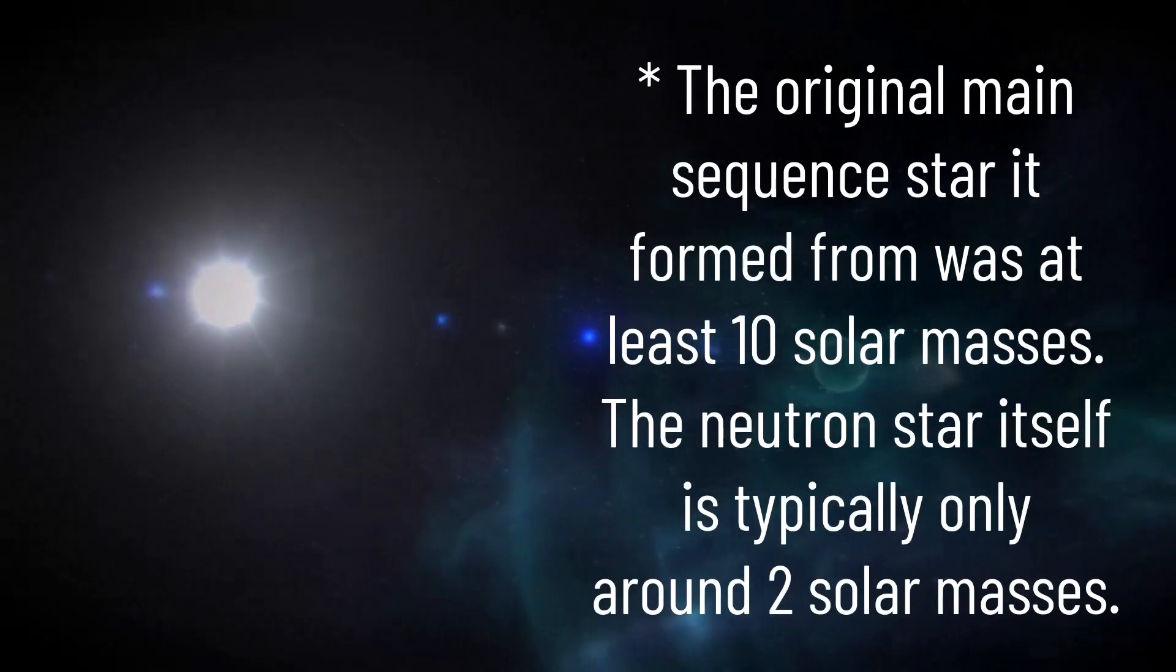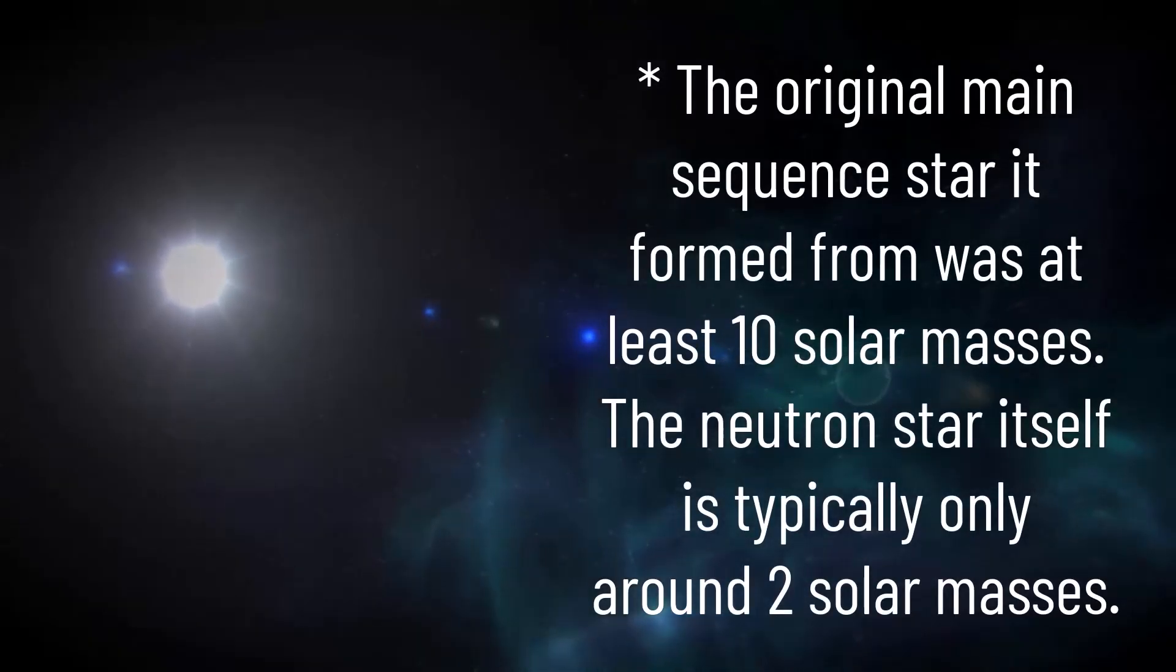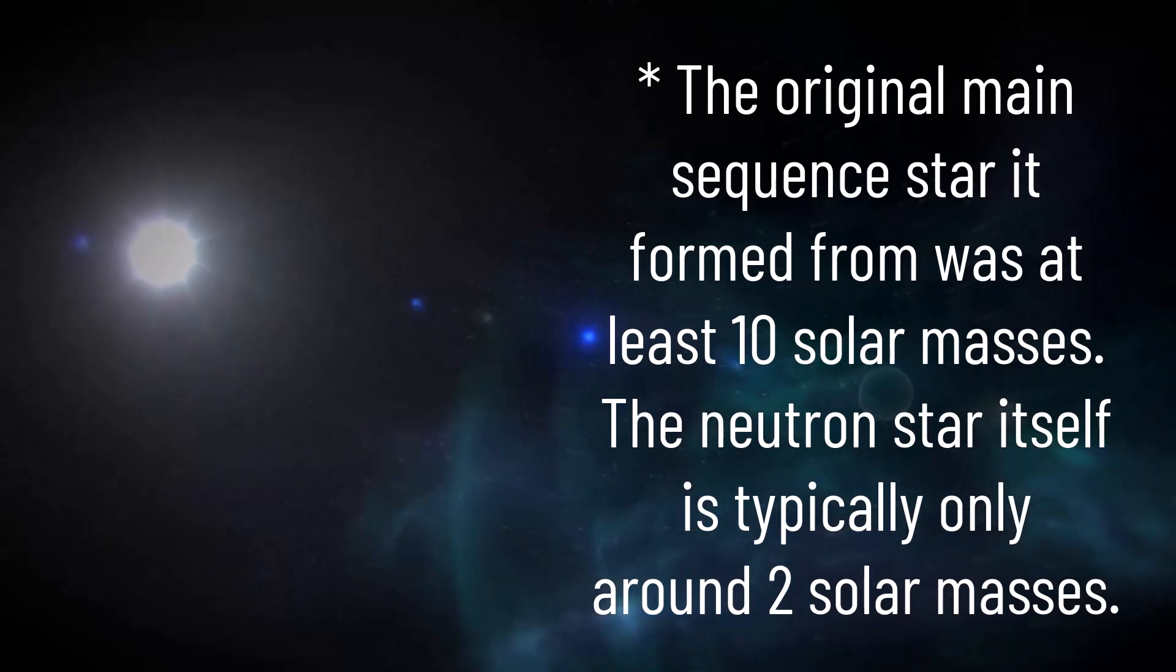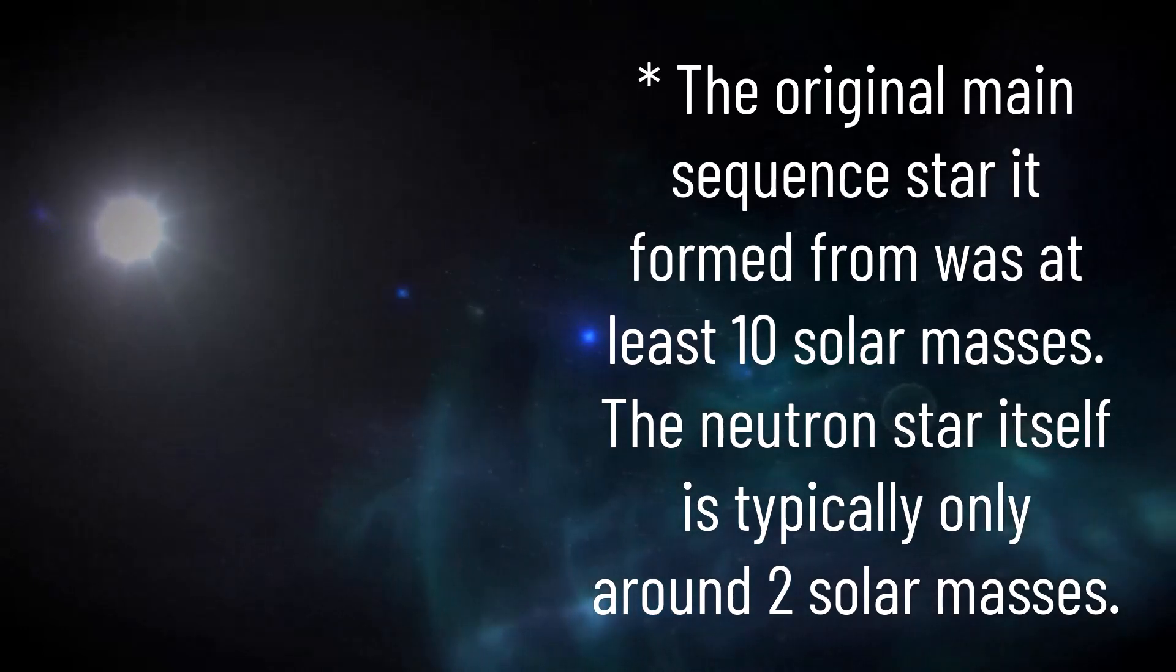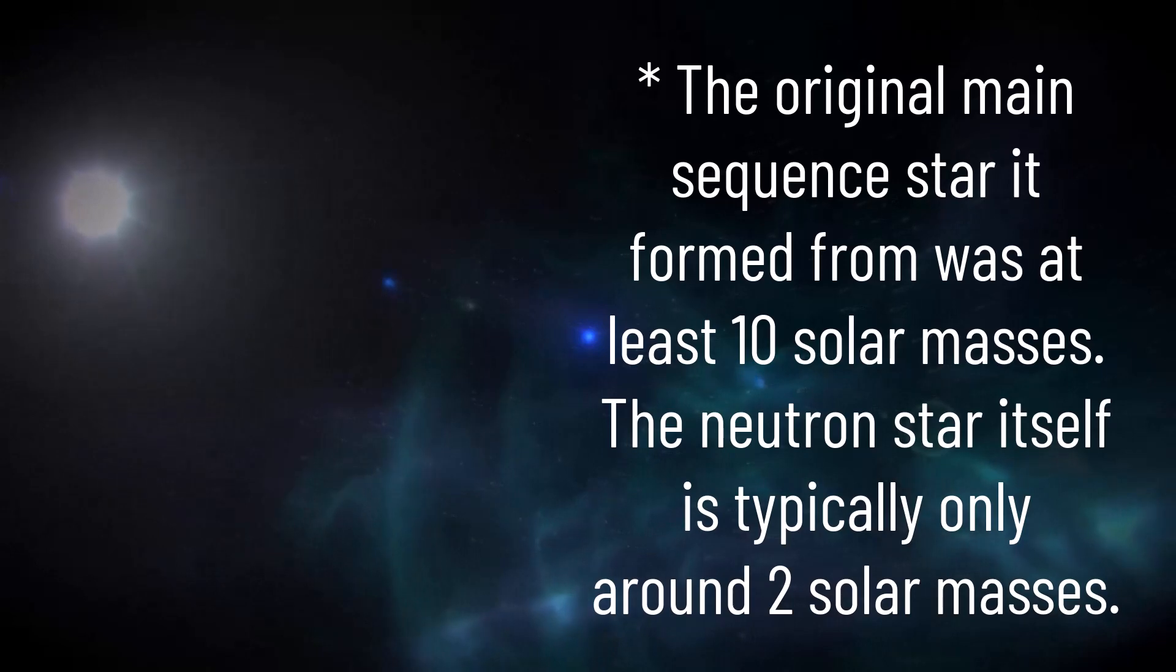Neutron degeneracy pressure is only able to hold an object up if it's at least 10 solar masses. Just think about that for a moment. Typical neutron stars are even smaller than the Earth, yet they have to be at least 10 times heavier than the Sun, which is millions of times heavier than Earth for comparison. These objects are already so spectacular, and exist in such extreme conditions, and the theory surrounding them is about to get even more exotic.